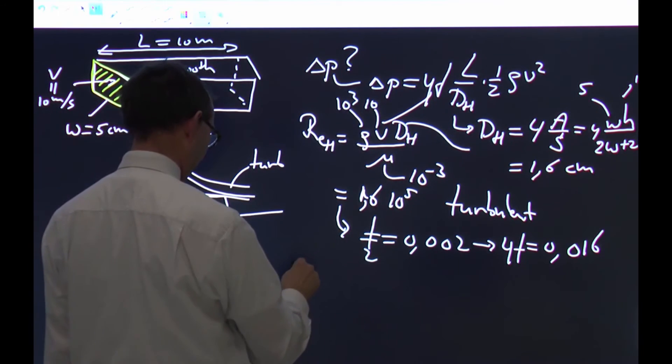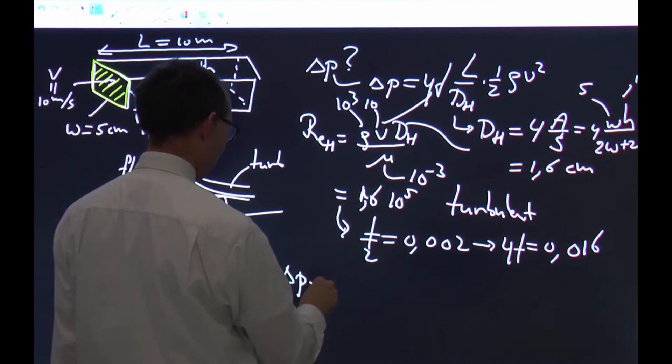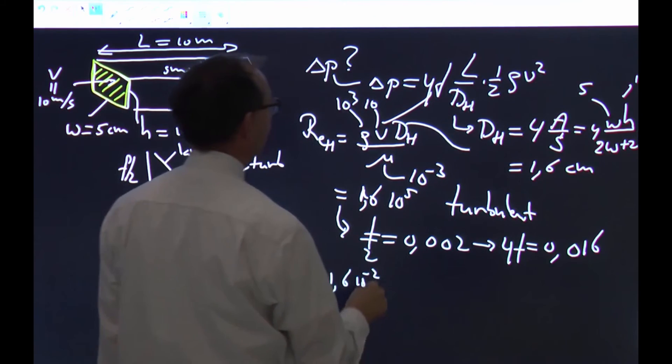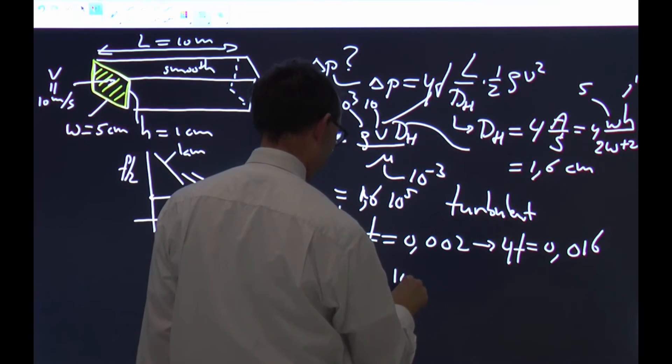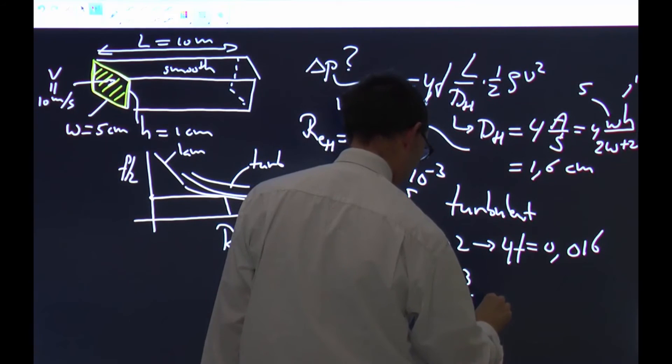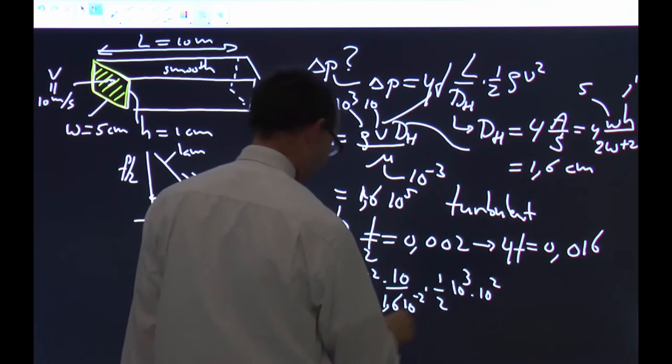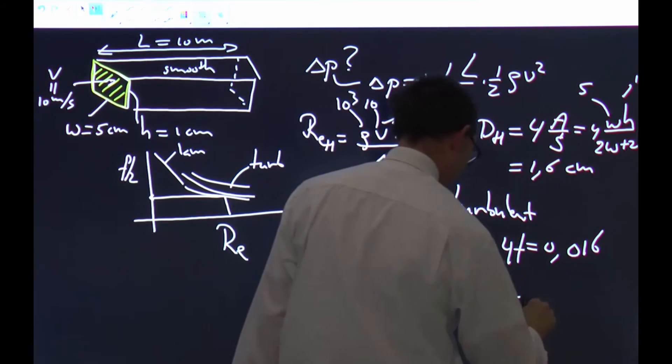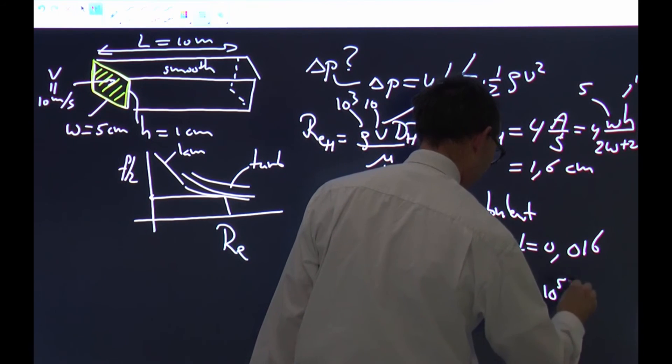Now I can equate everything, which I will do. Delta p equals 4f, that is 1.6 times 10 to the minus 2, dimensionless, times the length, 10 meters over the hydraulic diameter, 1.6 times 10 to the minus 2 as well. A half, rho is 10 to the third, v squared is 10 to the power 2, I can scratch these out, so I have 10 over 2 is 5, times 10 to the fifth Pascal, which is 5 bar.